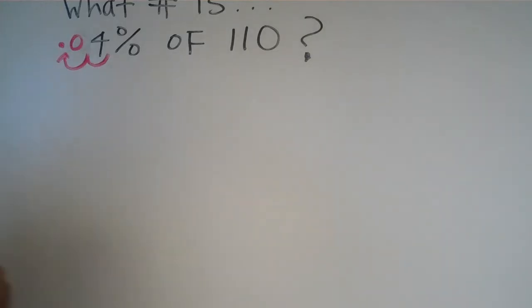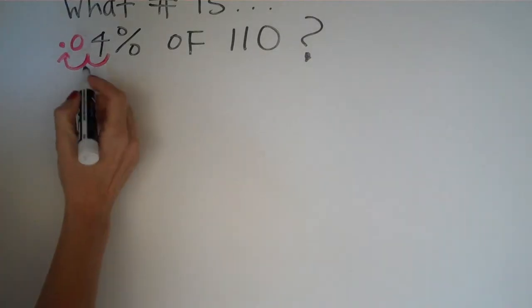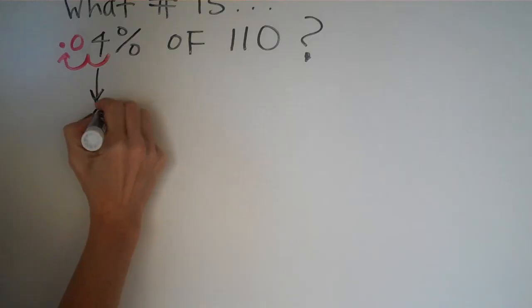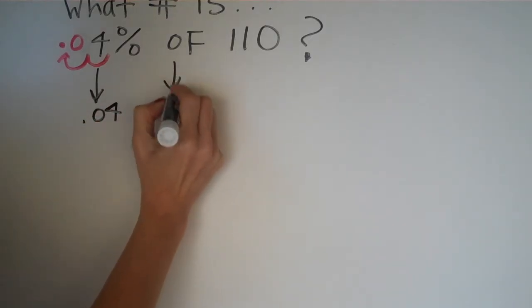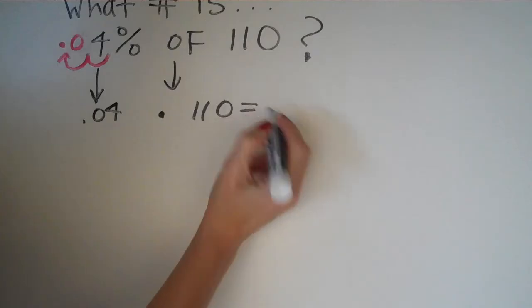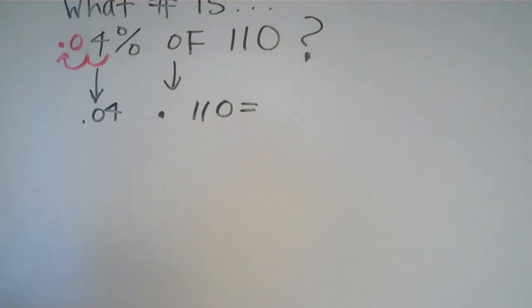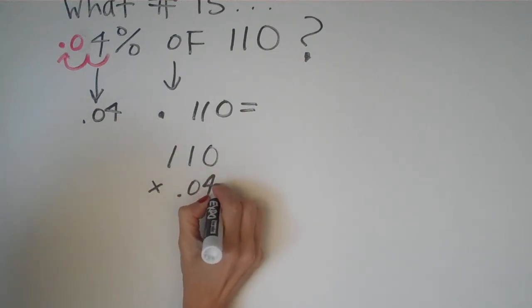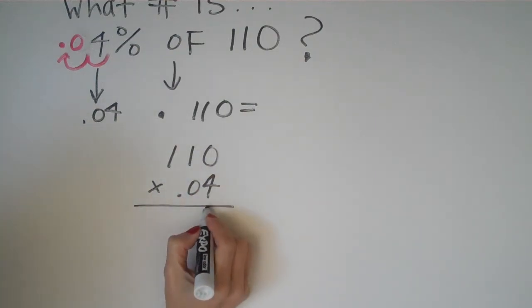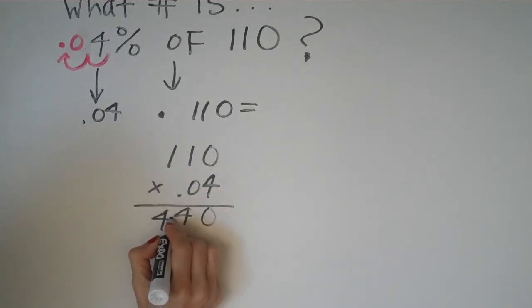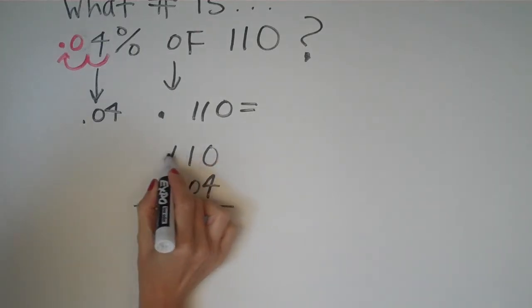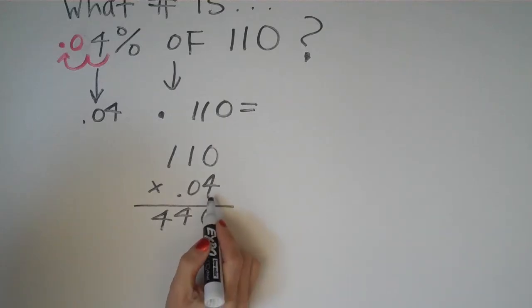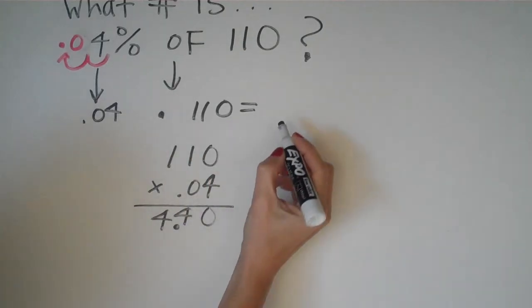The rest is just simple multiplication: 110 times 0.04. We have that's a zero, that's a four, that's four, and if we multiply all of this, this would all get to be zeros. So we're just going two places over to the left, and our answer is 4% of 110 equals 4.4. Let's try another example.